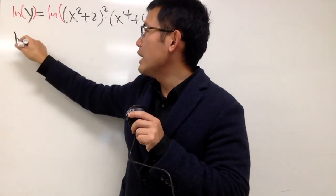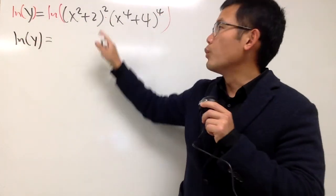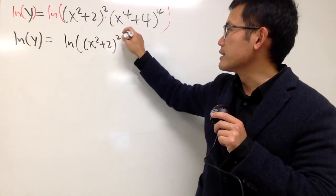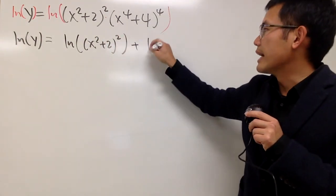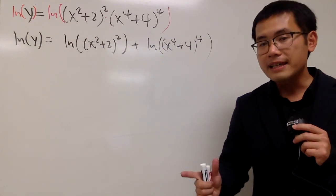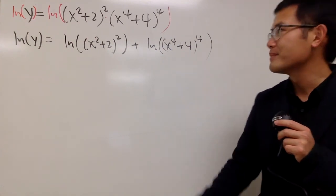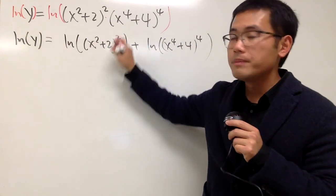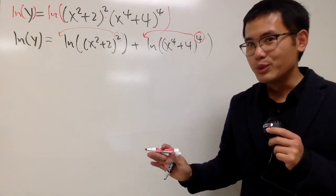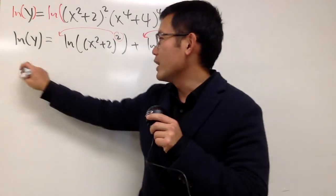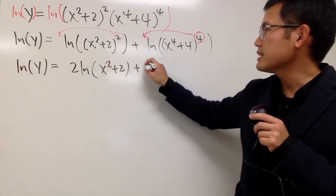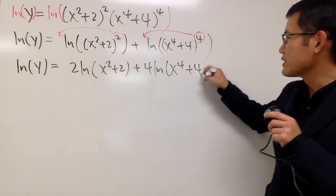On the left hand side, we have natural log of y. For the right hand side, this is a product, so we can write this as natural log of the first term, which is x squared plus 2 raised to the second power, and then add natural log of x to the fourth power plus 4, raised to the fourth power. We can actually do more with natural log properties — we have natural log of something to a power, so we can bring that power to the front. This is just a log property, it has nothing to do with the derivative power rule. So we get: ln y equals 2 times natural log of x squared plus 2, plus 4 times natural log of x to the fourth power plus 4.